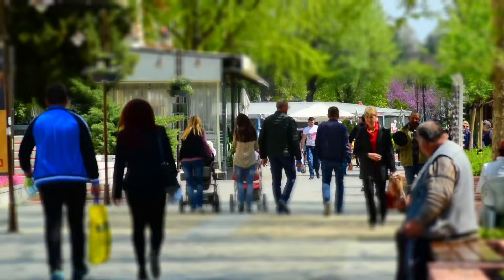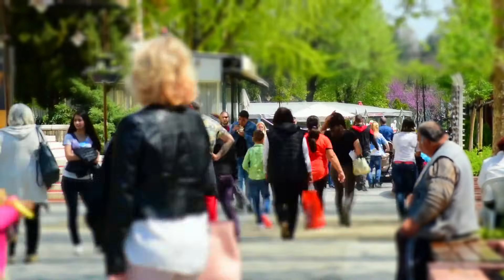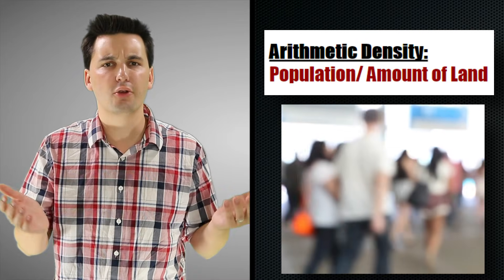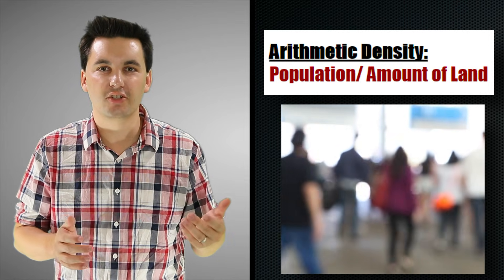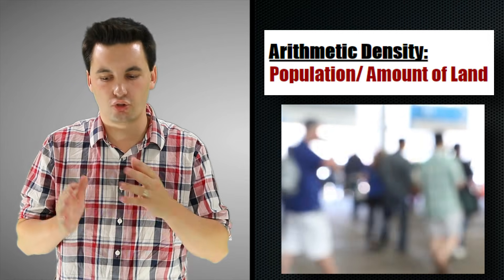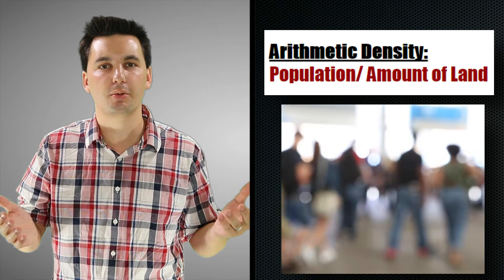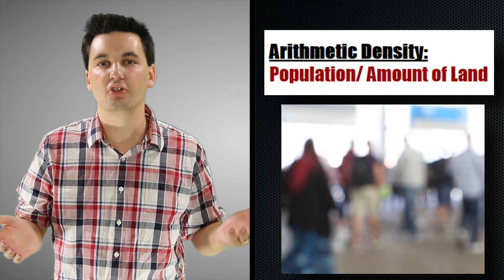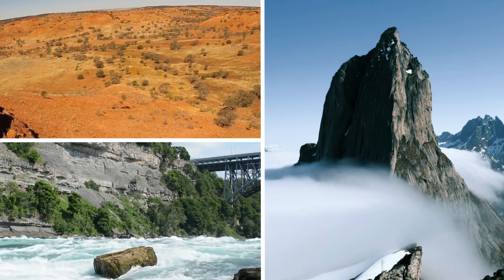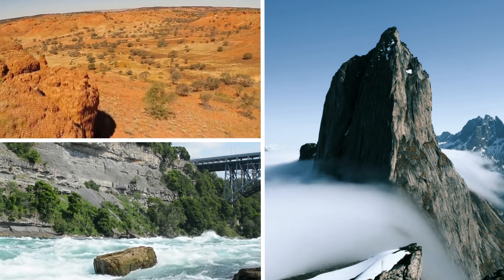Now we're going to get into population density more. Population density is how many people are living in a certain geographic area, and we can see it broken into three different types. The first and easiest is arithmetic density, calculated by taking the total population and dividing it by the total amount of land. This shows how spread out people are — a high number means people are clustered together, while a low number means they're dispersed. One thing to keep in mind: we're dividing by total land, so there could be land no one is living on — mountain ranges, infertile soil, rivers — which can create some distortion in the numbers.